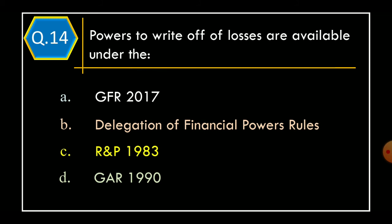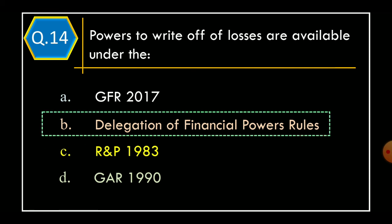Question 14. Powers to write-off of losses are available under the. Option A: GFR 2017. Option B: Delegation of financial powers rules. Option C: RNP 1983. Option D: GAR 1990. The correct option is Option B: Delegation of financial powers rules.